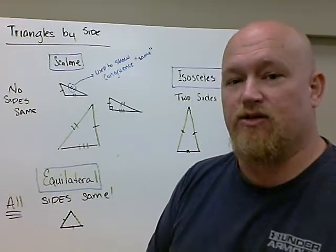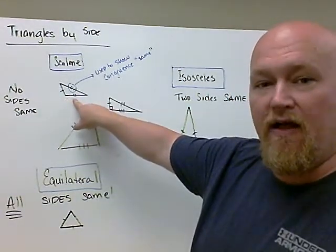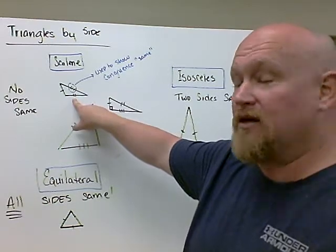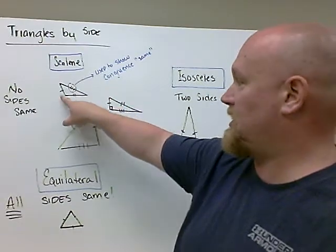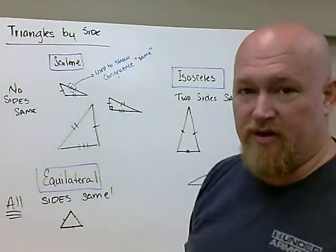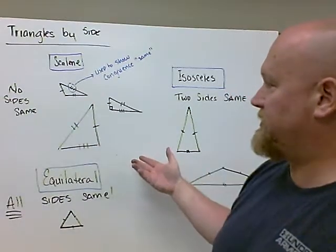Oftentimes in geometric sketches, you'll see these little hash lines in the middle of the side that annotate or mean this side is a different measurement than this side, which is a different measurement than this side, because that's side one, that's side two, side three. Scalene triangles have no sides that are the same.